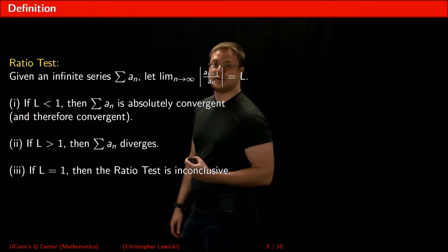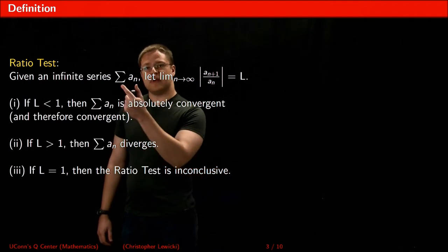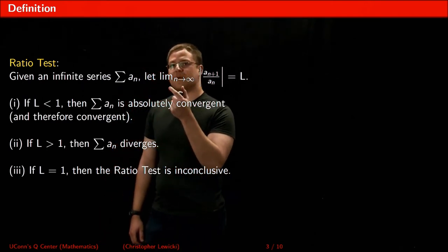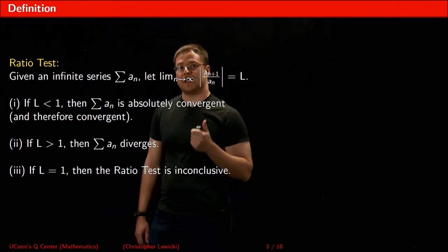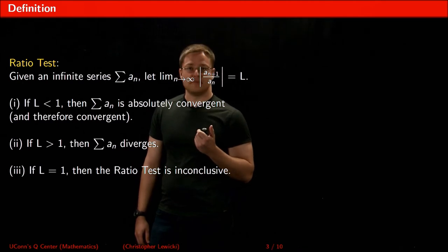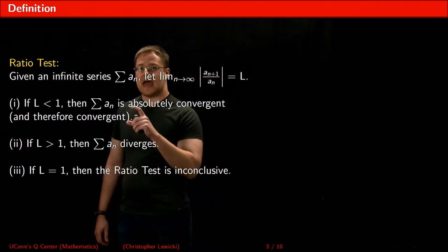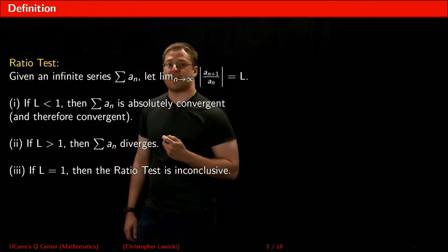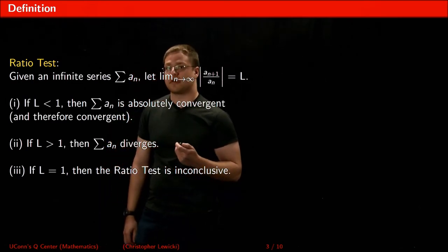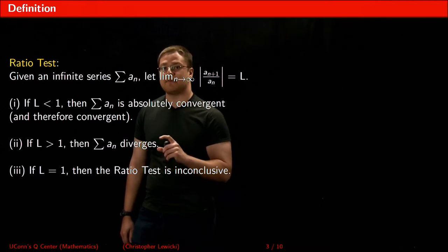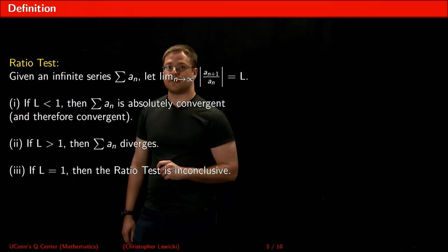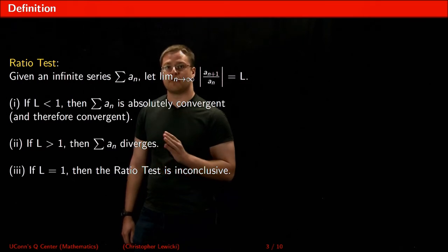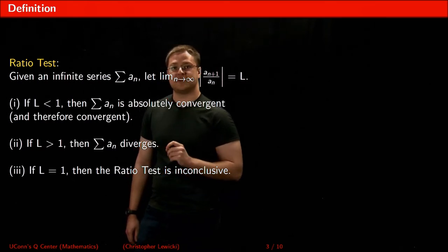Let's take a look at the definition. If we have some infinite series and we take the limit as n goes to infinity of the absolute value of a(n+1) divided by a(n), we get some limit L. If L is less than 1, the series is absolutely convergent and therefore convergent. If L is greater than 1, the series diverges. If L equals 1, the ratio test is inconclusive, meaning you need to use some other test to determine convergence or divergence.